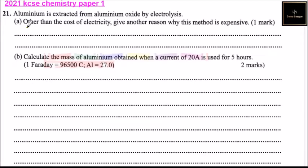This is question number 21. Aluminum is extracted from aluminum oxide by electrolysis. Part (a): Other than the cost of electricity, give another reason why this method is expensive.